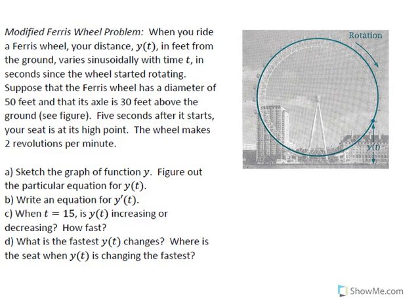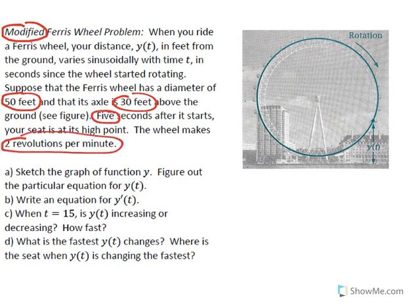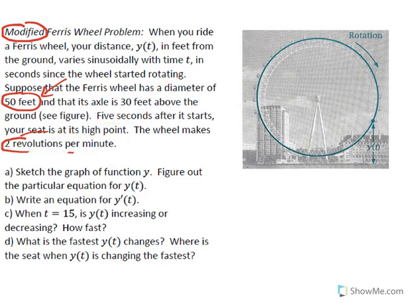Today we'll look at a word problem for our lesson objective, using what we just discussed about the parameters a, b, c, and d to model it with the sinusoidal model. This is basically number 1 from the exercises, but modified with changed values. You would also try number 1 from your textbook using this example to help you.